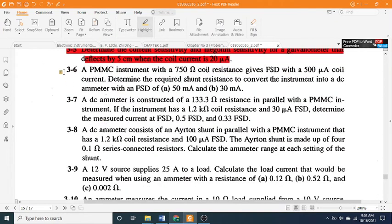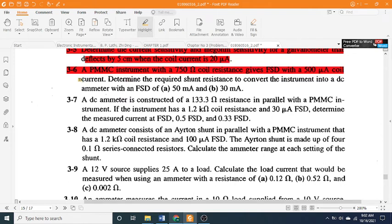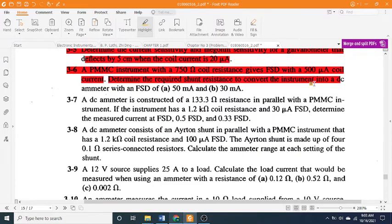3-6: A PMMC instrument with a 750 Ω coil resistance gives full-scale deflection with a 500 μA coil current. Determine the required shunt resistance to convert the instrument into a DC ammeter with an FSD of (a) 50 mA and (b) 30 mA.